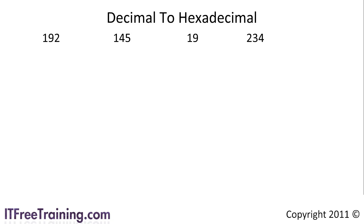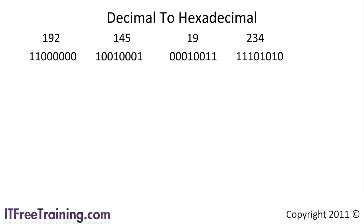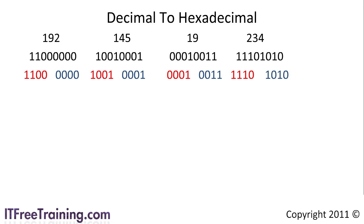First I would convert the numbers into binary using the previously shown method. Once the numbers are in binary they are easier to work with. The next step is to divide the binary into groups of 4. Dividing the bits up like this gives each group of 4 bits 16 different possible values. Hexadecimal uses 16 values and thus that is where hexadecimal gets its name. It is a simple matter to convert these values into hexadecimal values.